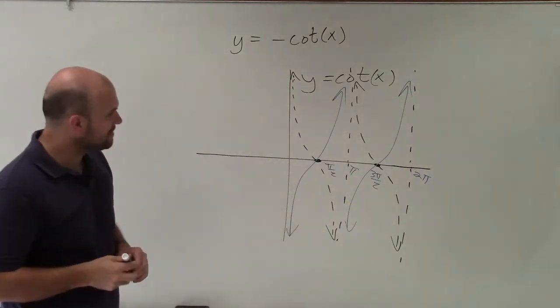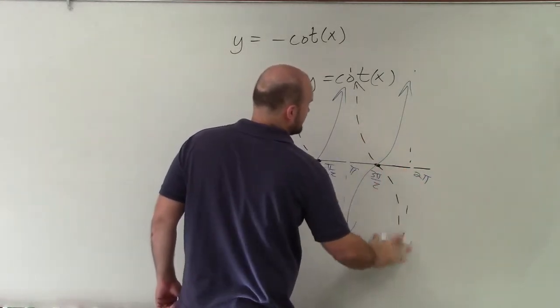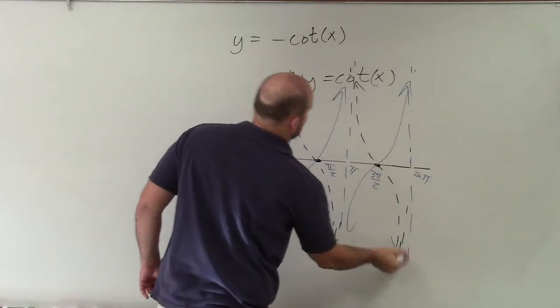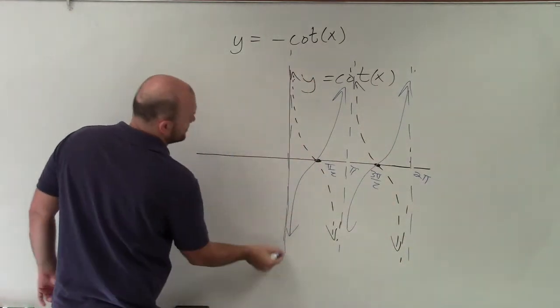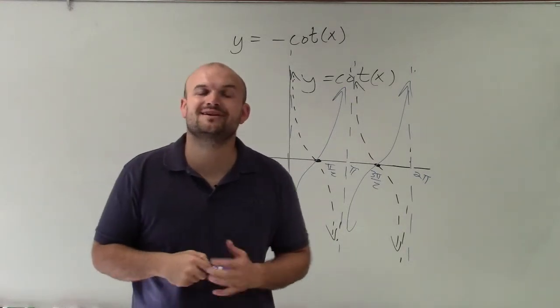So there you go, ladies and gentlemen. I guess I can just rewrite these in blue. Maybe I'll make it easier. There's an asymptote up there. So there you go, ladies and gentlemen. That is how you graph y equals negative cotangent of x. Thanks.